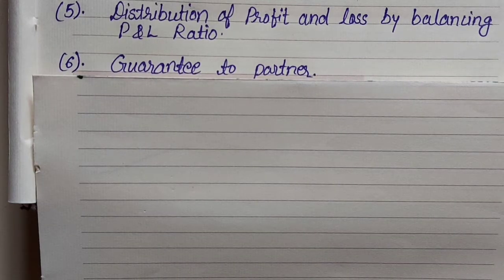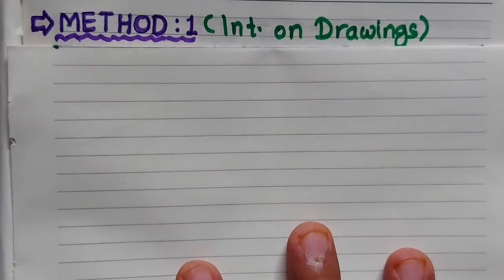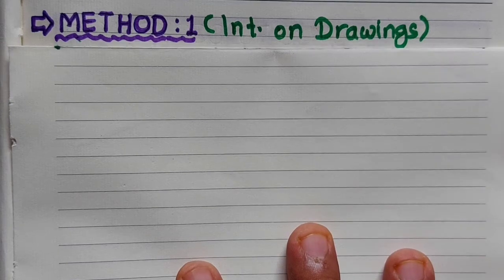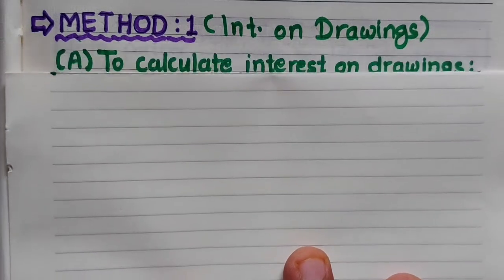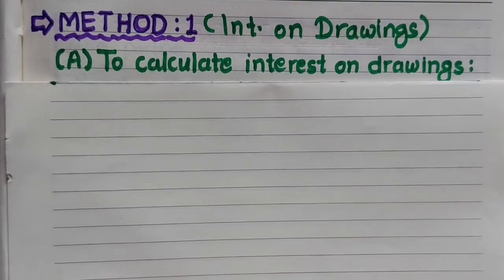The last method is Guarantee to Partner. Friends, I will tell you about this method when I teach it. It is my suggestion to you — note down all these methods. We will learn them one by one, and for each method I will also solve the exercise sums. So let us look at our first method: Interest on Drawings. As we saw, Interest on Drawings has two types; the first type we will learn today — to calculate Interest on Drawings.